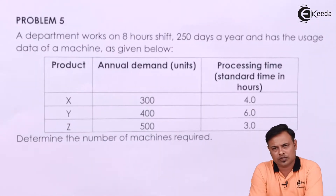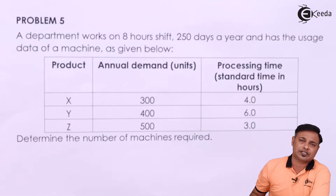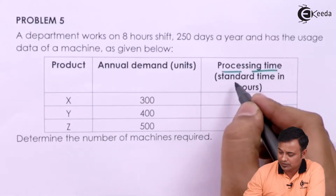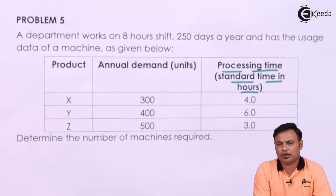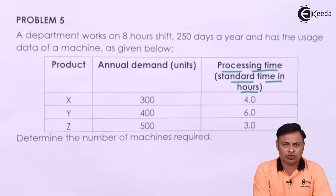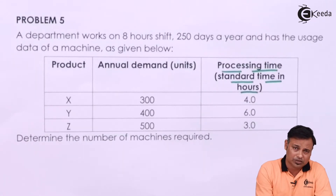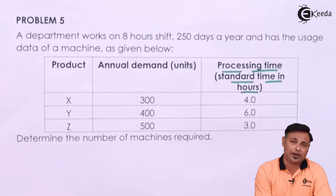If you read the question carefully, one doubt that students often ask is: where have they specified that this is the time per unit? They are given processing time — the standard time in hours — but nowhere in the problem is it stated that this is the time per unit. This is an institute-based problem from the study module and they have not specified that the time is per unit. So we have to make an assumption — it should be understood or implied that it is the standard time per unit.